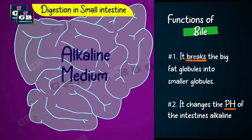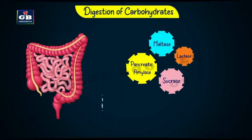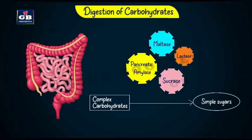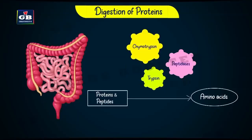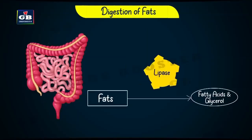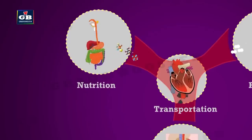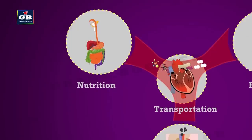The digestion of food gets completed in the small intestine. In the complete process of digestion, carbohydrates are converted to sugars, proteins are converted to amino acids, and fats are converted to fatty acids and glycerol. The nutrients formed in digestion reach the cells through the blood circulatory system.